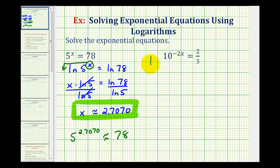Let's take a look at our second example. Here we have 10 raised to the power of negative 2x equals 2 thirds. The exponential part is already isolated on the left side of the equation. So now we'll take either the common log or natural log of both sides of the equation.